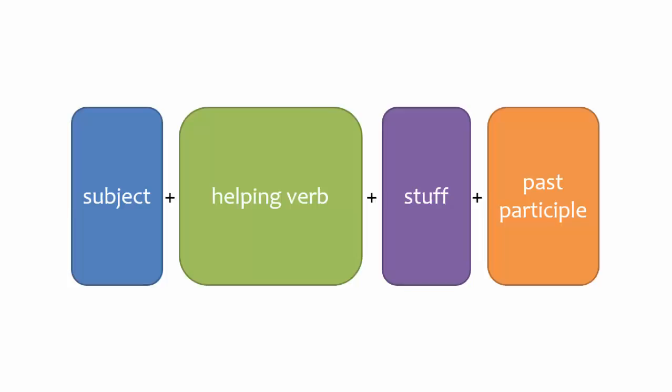When talking about things in the past, most often you will use the compound past tense, which is also known as the present perfect. Videos comparing the compound past and simple past, and comparing German past tenses to English past tenses, are in the playlist.